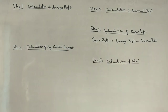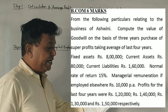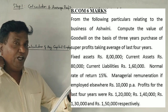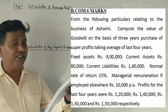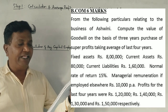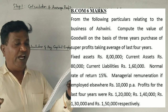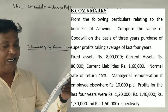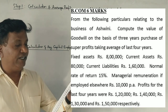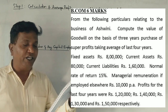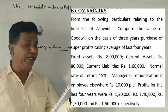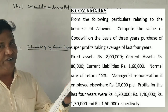Now, one question. From the following particulars relating to a business of Ashwini, compute the value of goodwill on the basis of 3 years purchase of super profits, taking the average of the last 4 years. Fixed assets: 8 lakhs. Current assets: 80,000. Current liabilities: 1 lakh 60,000. Normal rate of return: 15%. Managerial remuneration if employed elsewhere: 10,000. Profits for the last 4 years: 1 lakh 20, 1 lakh 40, 1 lakh 30, 1 lakh 50.